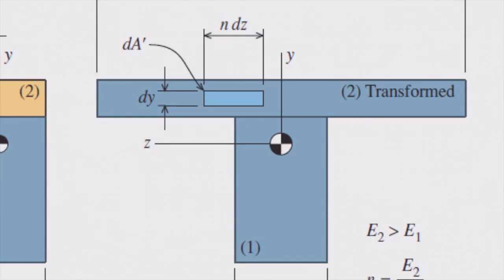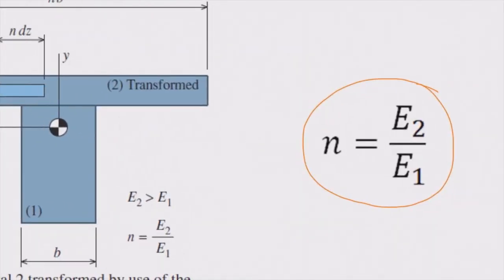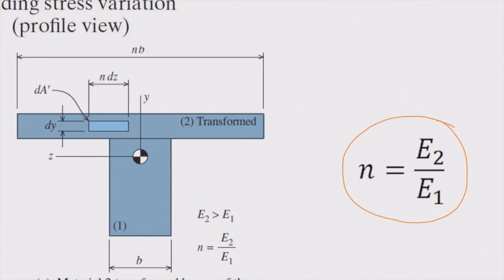How much should I increase or decrease the width? It depends on the ratio between the moduli of elasticity of these two materials. We define a factor called the n factor. The n factor is the ratio between these two materials. Based on that n, I multiply the initial width of the section by the n factor to get the transformed width.